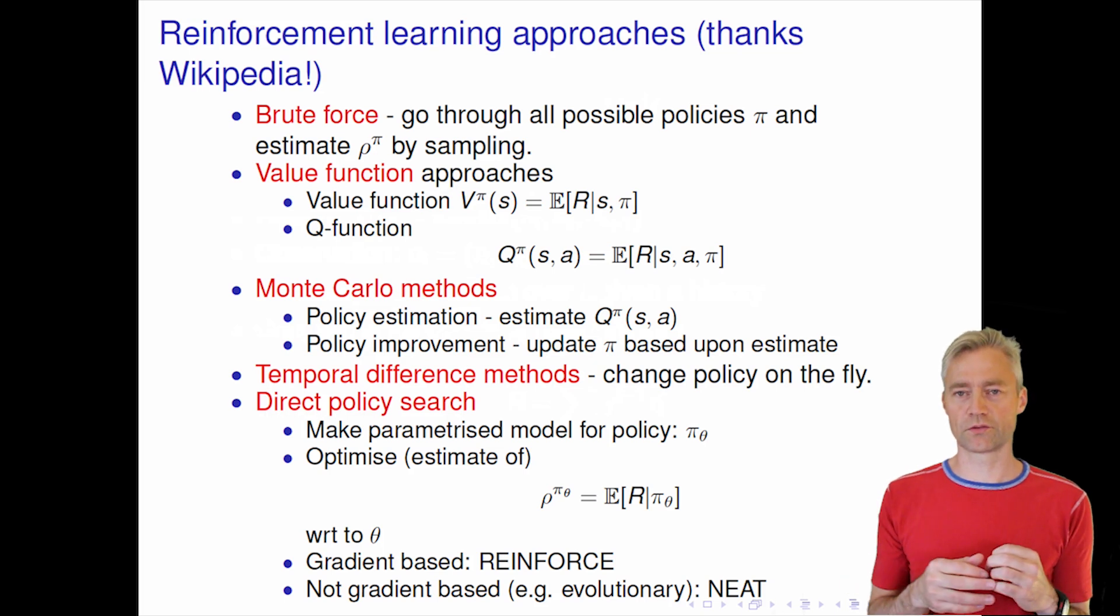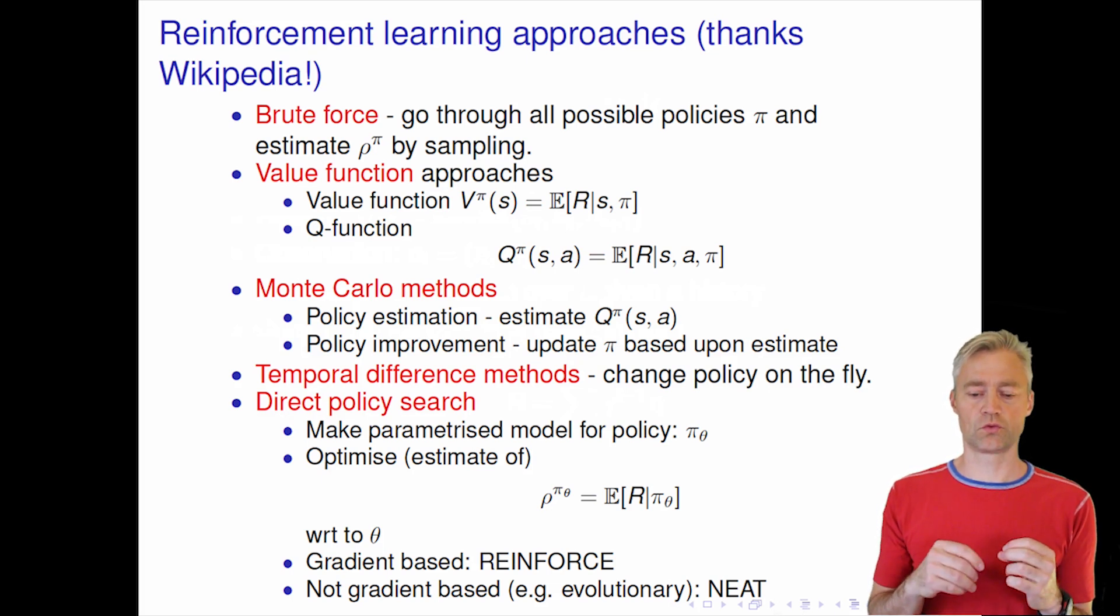If you cannot take gradients or we don't want to take gradients, then we can use, for example, evolutionary algorithms like the NEAT algorithm. So you do like a Monte Carlo search in the space of policies. And these policies can again be parameterized by a neural network or something like that.